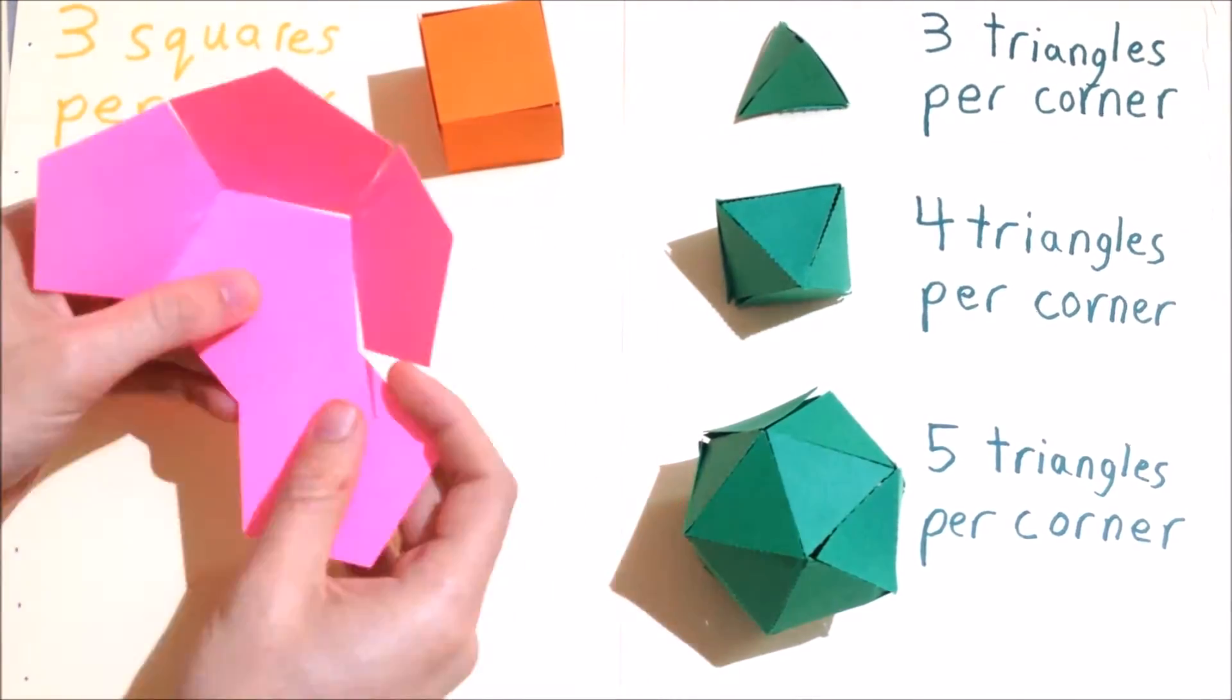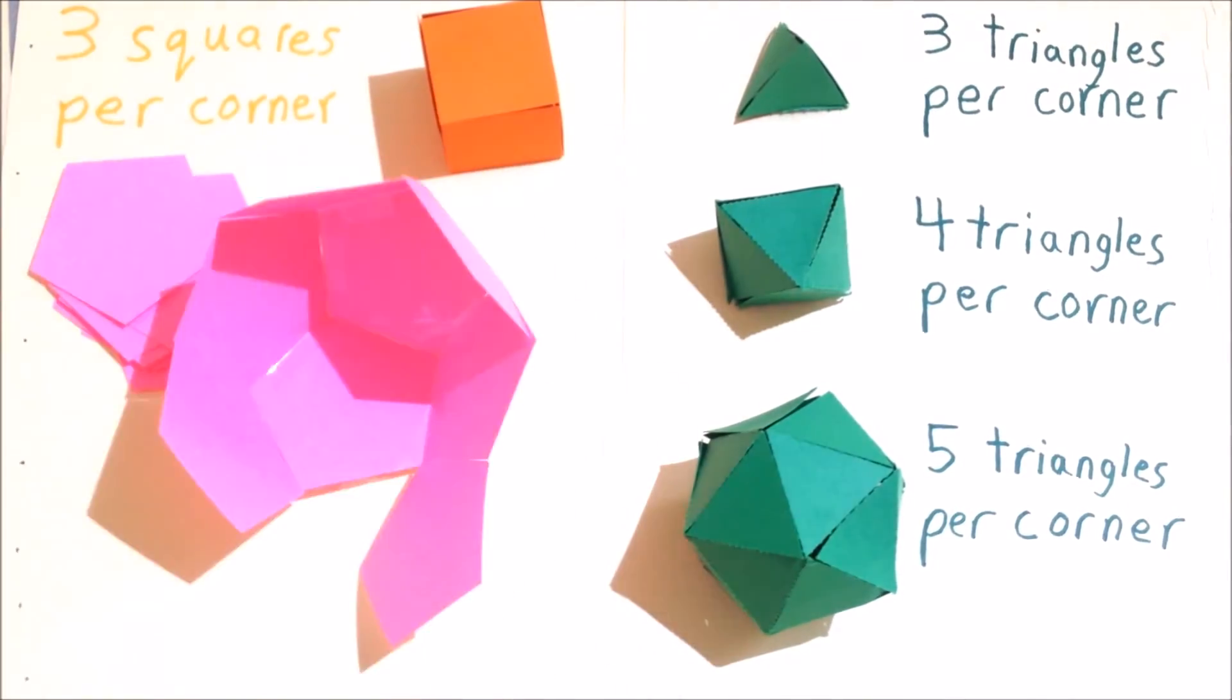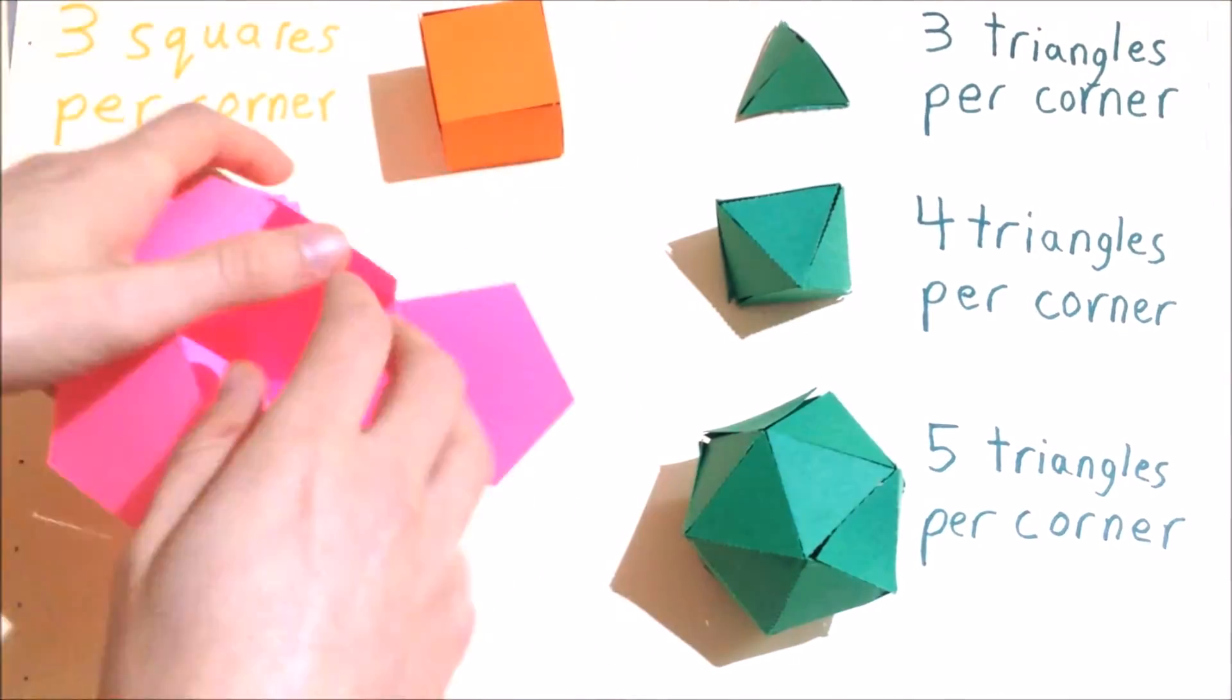And with pentagons, three pentagons at each corner works out nicely, four is too many, and two is not enough.